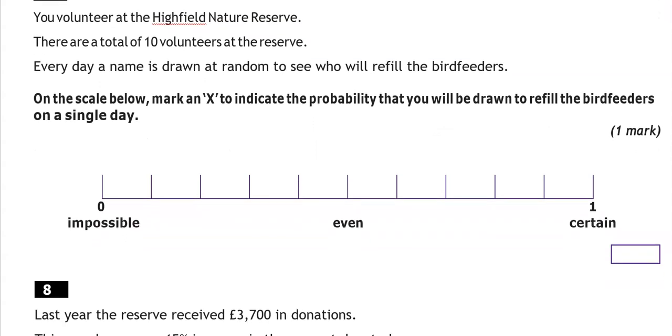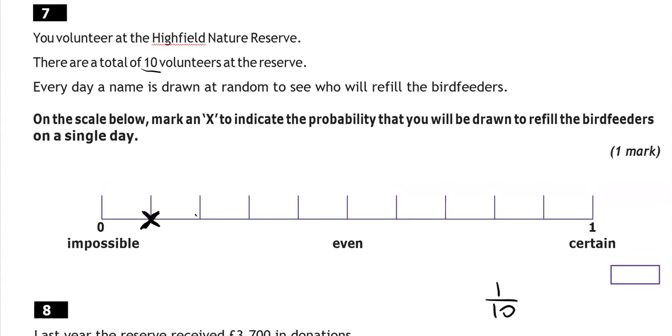You volunteer at the Highfield Nature Reserve. There are a total of 10 volunteers at the reserve. Every day, a name is drawn at random to see who will refill the bird feeders. On the scale below, mark an X to indicate the probability that you'll be drawn to refill the bird feeders on a single day. There are 10 volunteers in total, so we're talking about 1 out of 10. And this is split into 10 equal parts, so we're going to stop at the first one. And this represents 1/10.